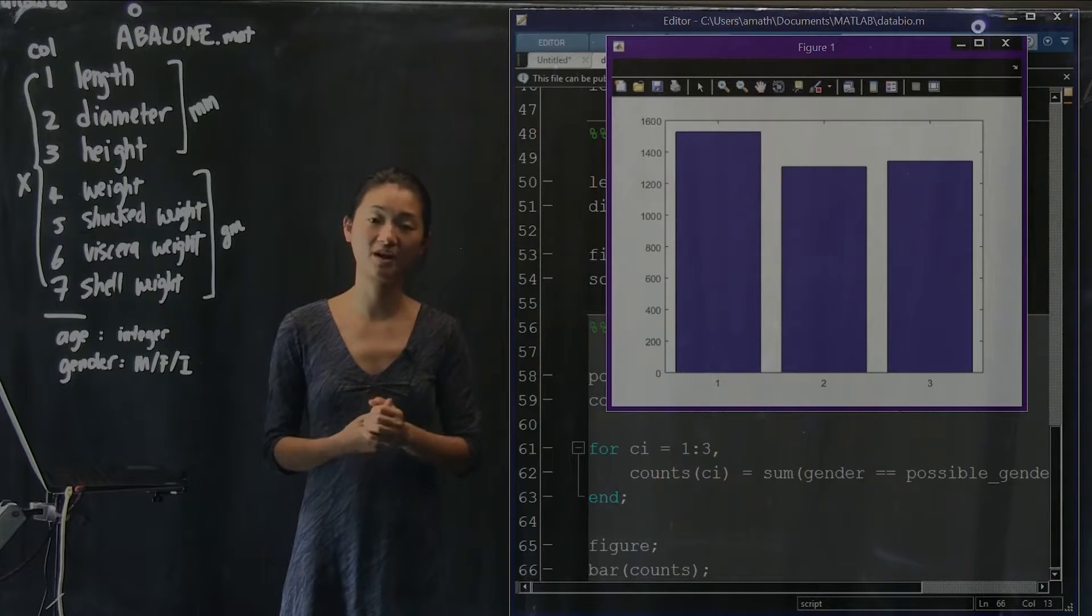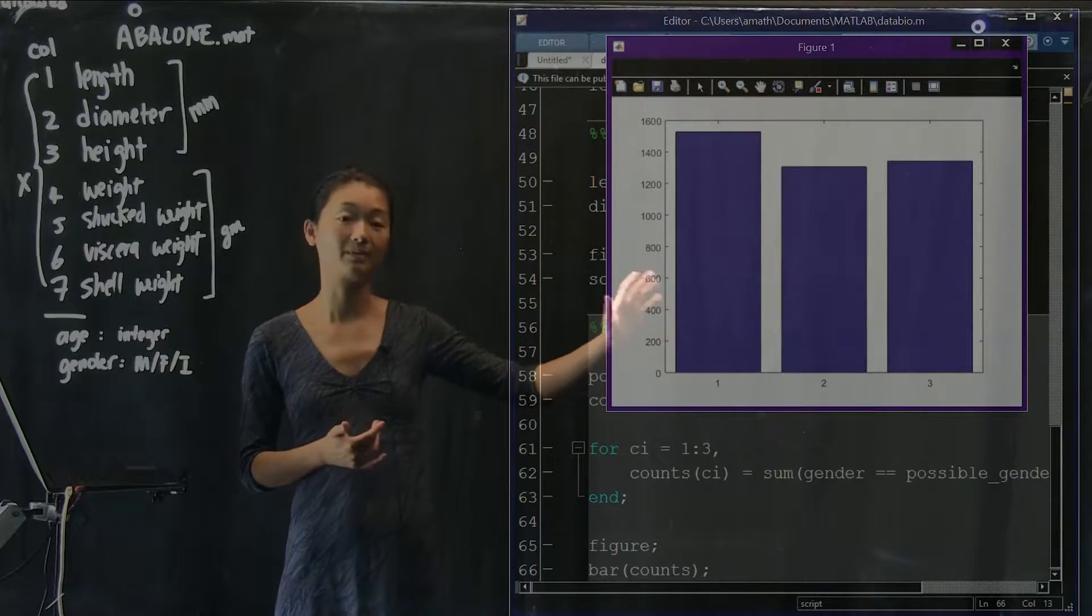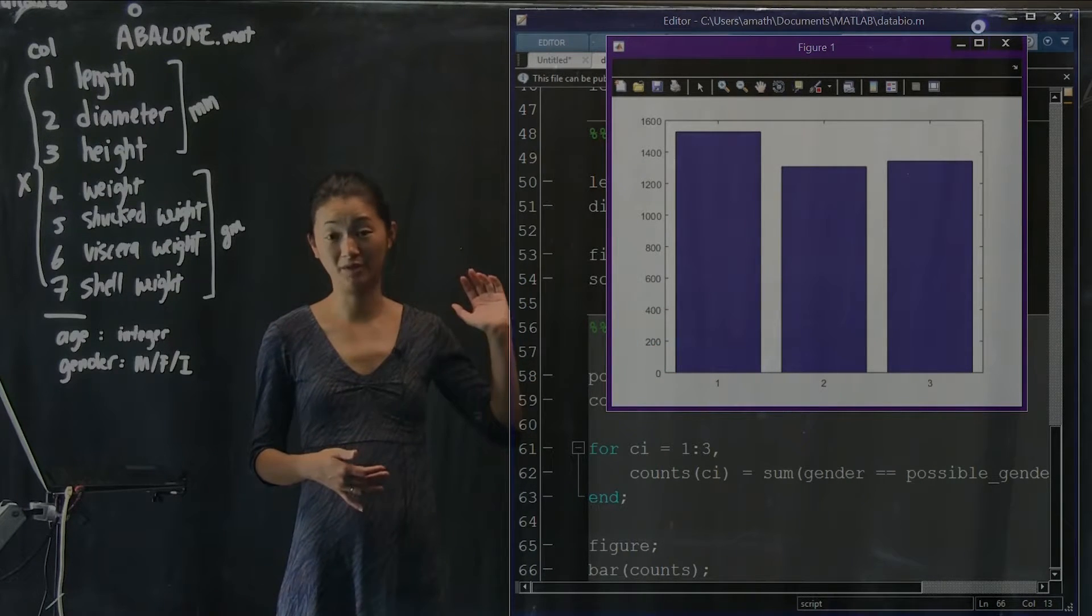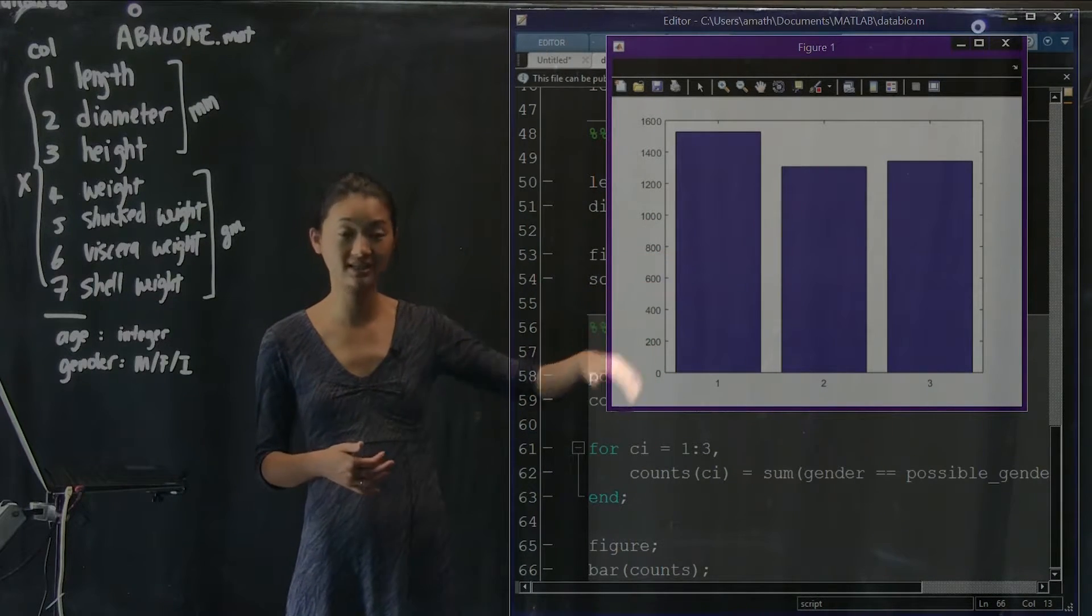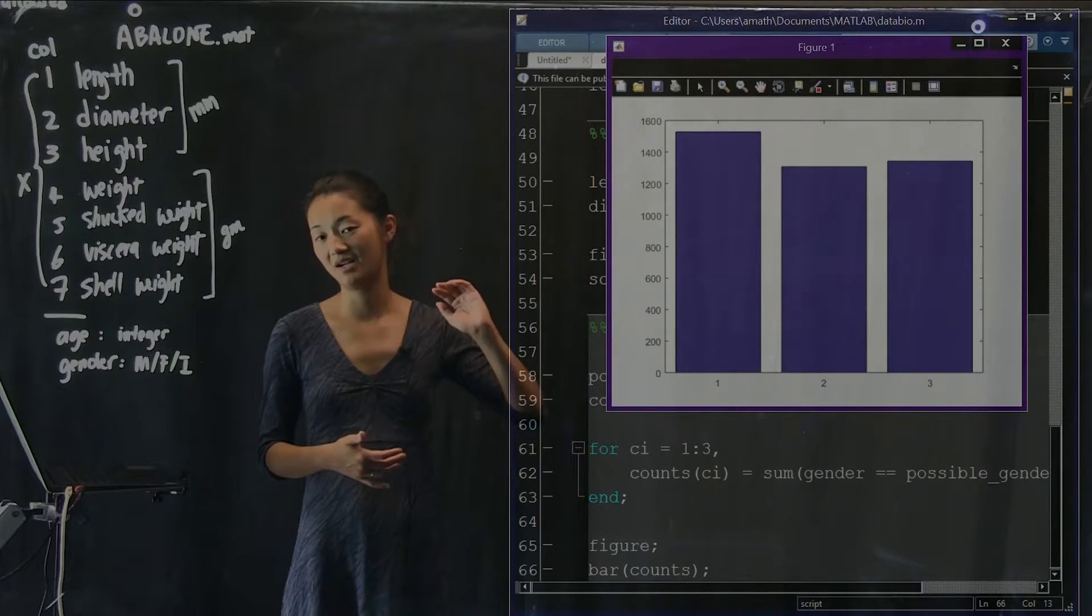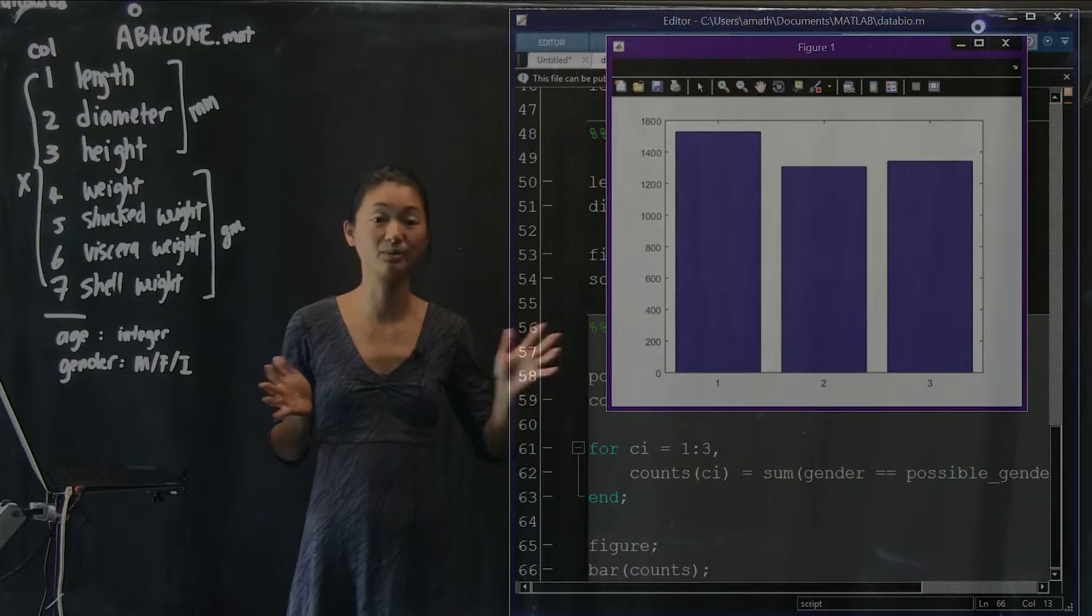And as you know from reading the documentation earlier for the plot function, almost everything about this particular graph can be customized. If I want it to be filled with a special color, I can do that. If I want the outline to be a different color, I can do that. I can add hash lines and I can add stuff on top of it. I can plot this on top of something else. I can put something else on top of this. All of these things are possible.